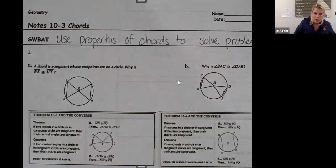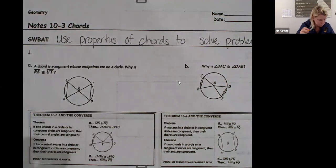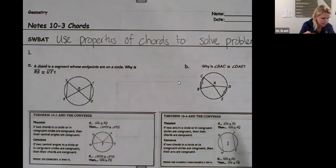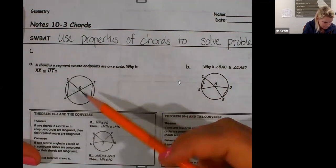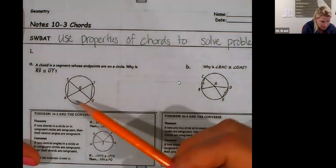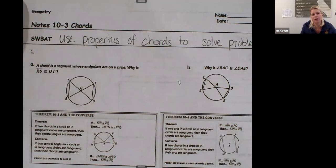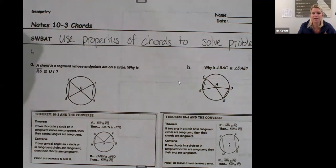So a chord is a segment whose endpoints are on a circle. That means that I've got S and R, that's a chord. So R, S, and U, T. Why are R, S, and U, T congruent? Like if you had to think about it, why would R, S, and U, T be congruent? Does anybody have any thoughts?